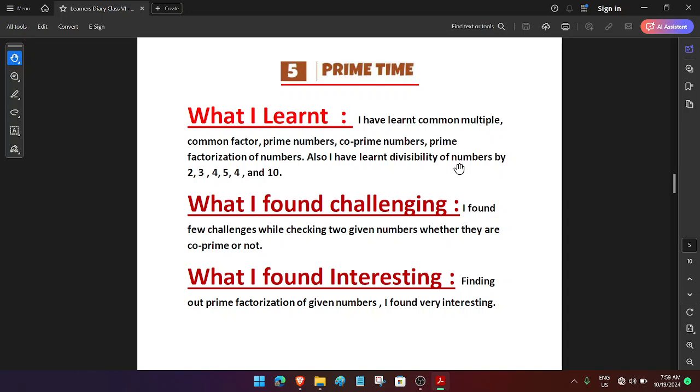So this is chapter five from Ganita Prakash book, new mathematics book as per new education policy. From chapter Prime Time, what I learned: I have learned common multiple, common factor, prime numbers, co-prime numbers, prime factorization of numbers.